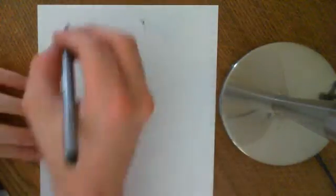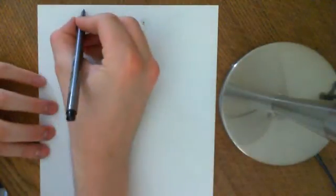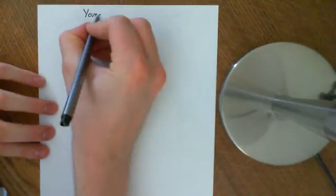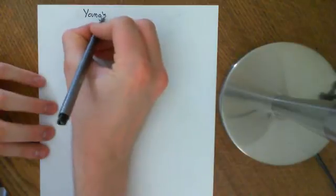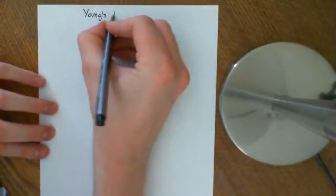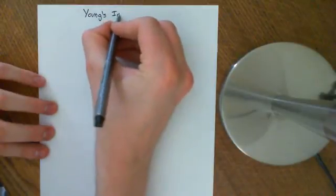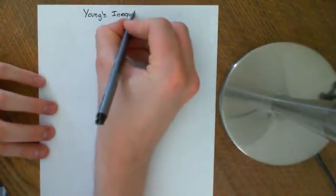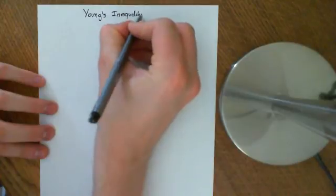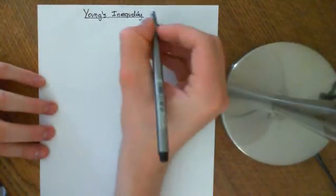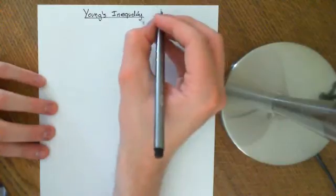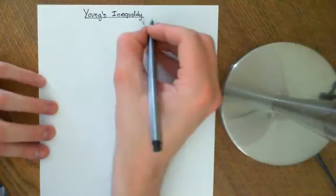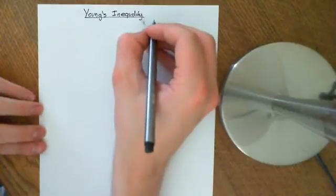We're going to begin the process of deriving Young's inequality. The reason is that in order to derive Minkowski's inequality, we have to first derive Hölder's inequality, and in order to derive Hölder's inequality, we have to first derive Young's inequality.